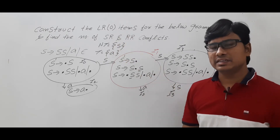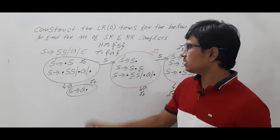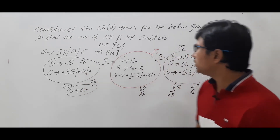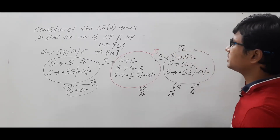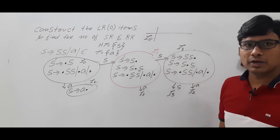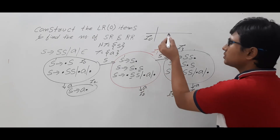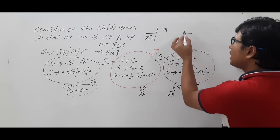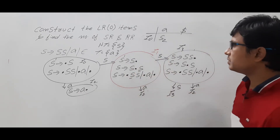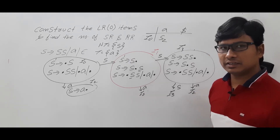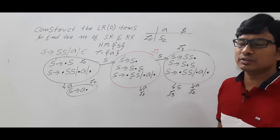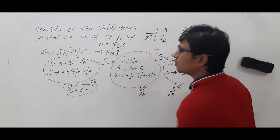Now we need to check whether there are any SR and RR conflicts. Look at item I0 — this is a reduced move and this is a shift move. Let me erase this so I can use the space to explain. Taking I0 and only the action part — in the action part we will have the reduced moves and the shift moves. The action part consists of terminals A and the dollar symbol. On I0 on A, I will write S2 because it is going to item number 2. Taking it as the LR0 parsing table.